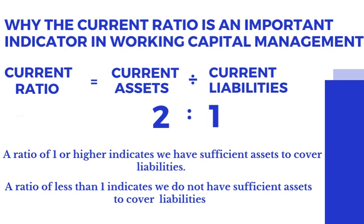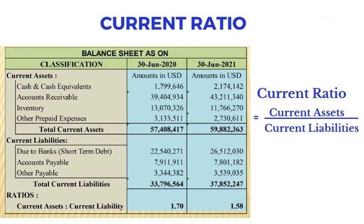A ratio of one or higher indicates we have sufficient assets to cover liabilities. A ratio of less than one indicates we do not have sufficient assets to cover liabilities. The current ratio is calculated by dividing current assets by current liabilities.